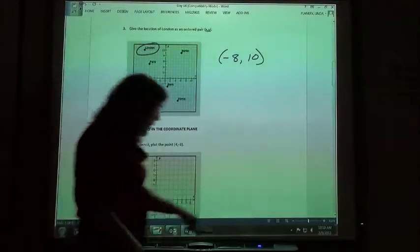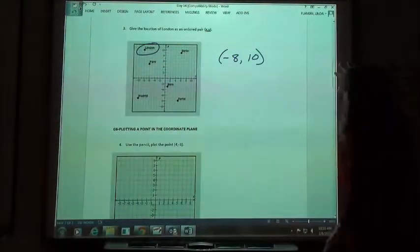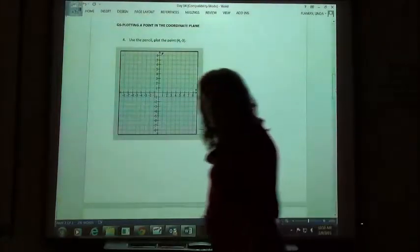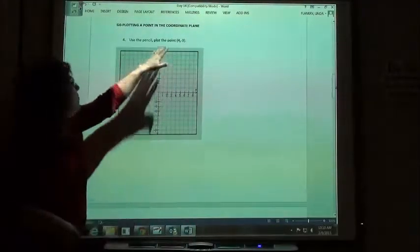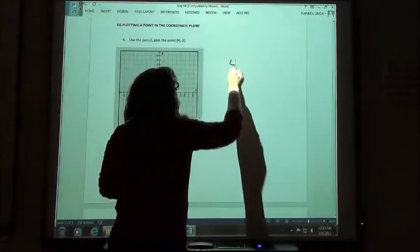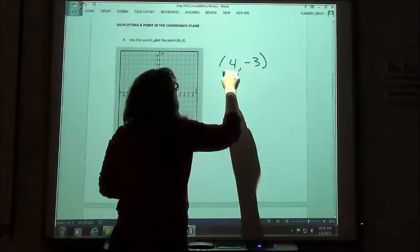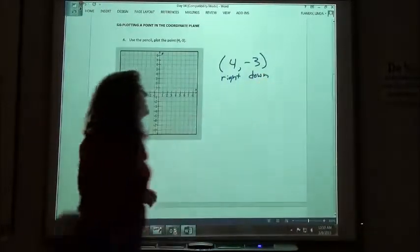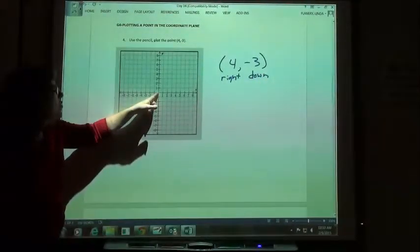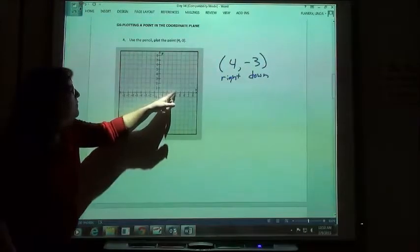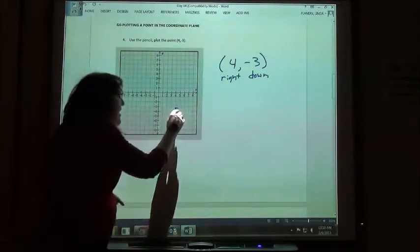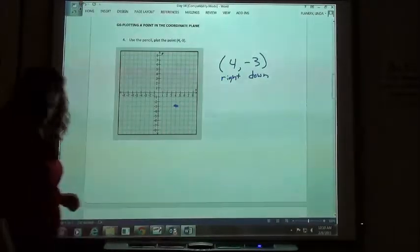They're going to have you plot points on the graph, wanting you to understand that you have to do both directions before you can put a dot. If I'm going to plot the point 4, negative 3, that tells me I'm going to go 4 to the right and down 3, since that's negative. Starting at 0, going 1, 2, 3, 4 to the right, 1, 2, 3 down, then I click. There should only be one dot on my graph.